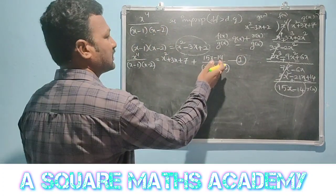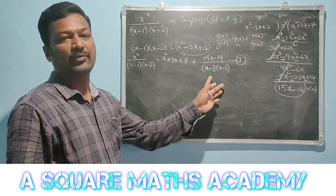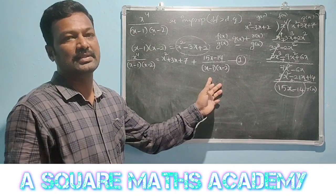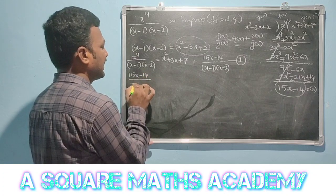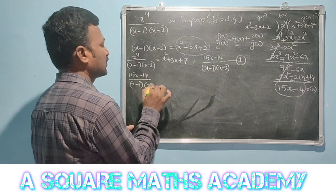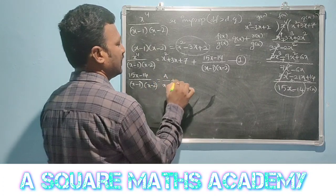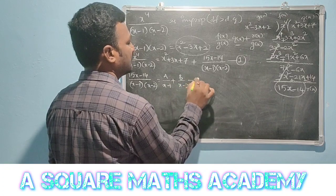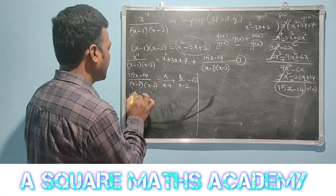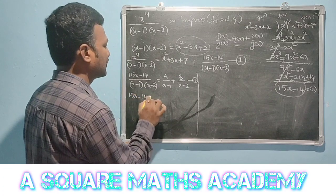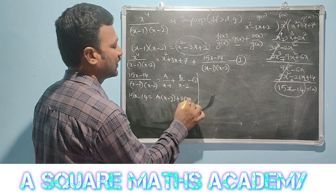Now we need to determine the partial fractions. The remainder (15x minus 14) over (x-1)(x-2) is a proper fraction, so the first rule applies: A over the first factor plus B over the second factor, giving A/(x-1) plus B/(x-2). Same process: 15x minus 14 equals A(x-2) plus B(x-1). Put x equals 1 to substitute — this is equation number 3.